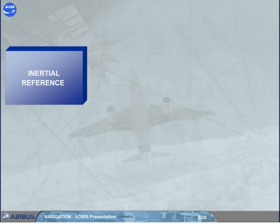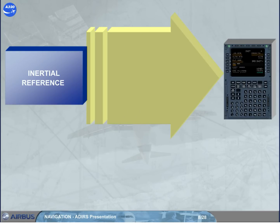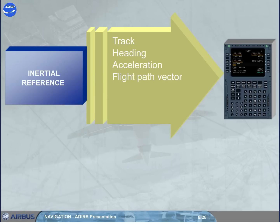The IR part provides inertial data to the FMGC, EFIS, and other users. The inertial data provided includes track, heading, acceleration, flight path vector, aircraft position, ground speed, and attitude.